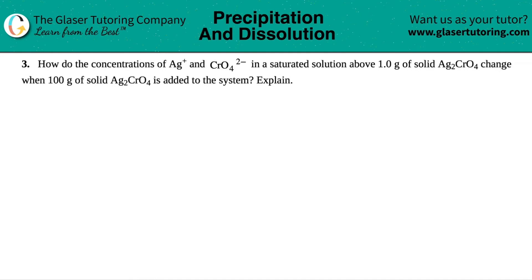Number three, how do the concentrations of Ag plus and CrO4 2 minus in a saturated solution above 1.0 grams of solid Ag2CrO4 change when 100 grams of the solid Ag2CrO4 is added to the system and then explain.